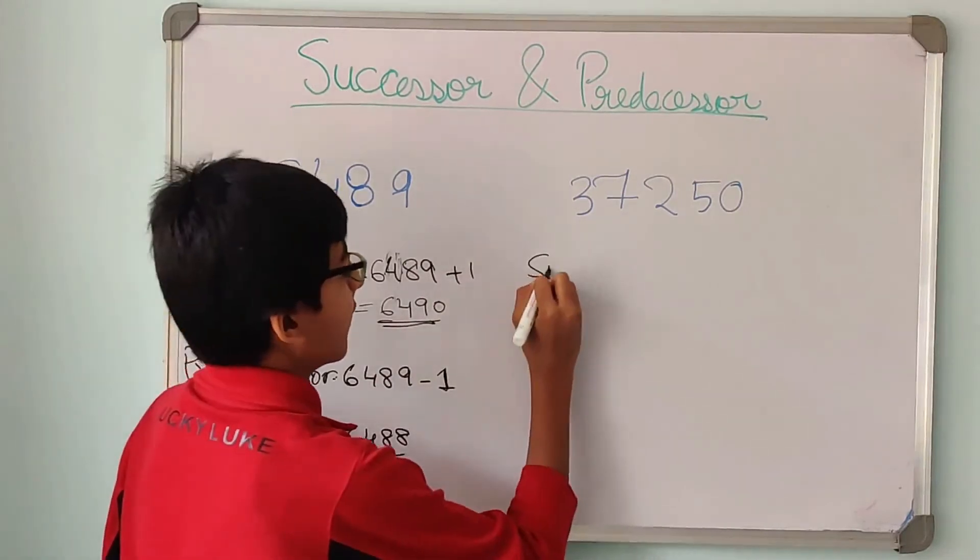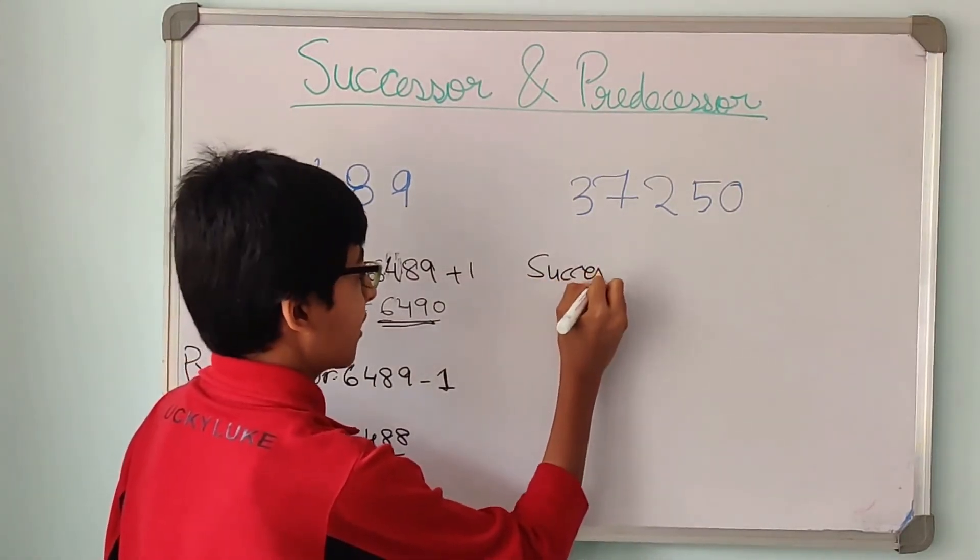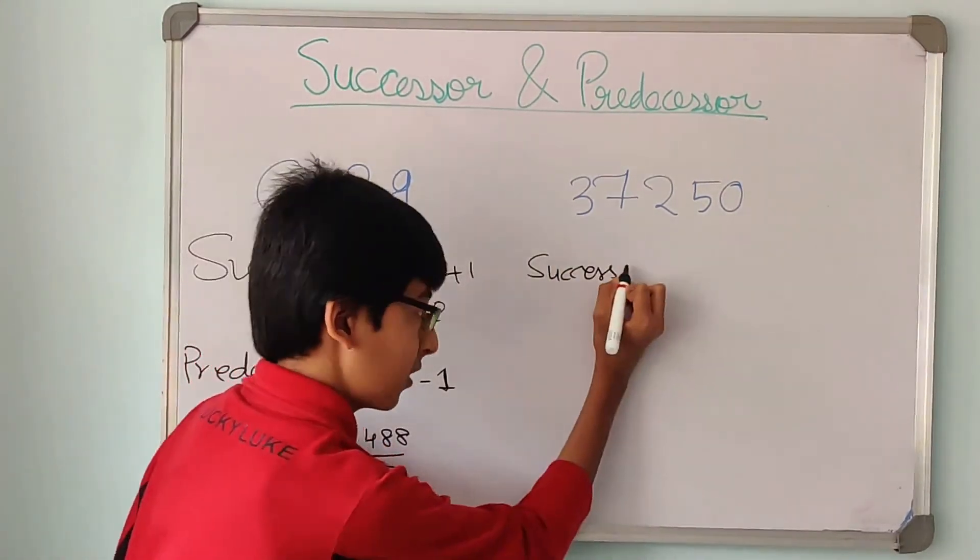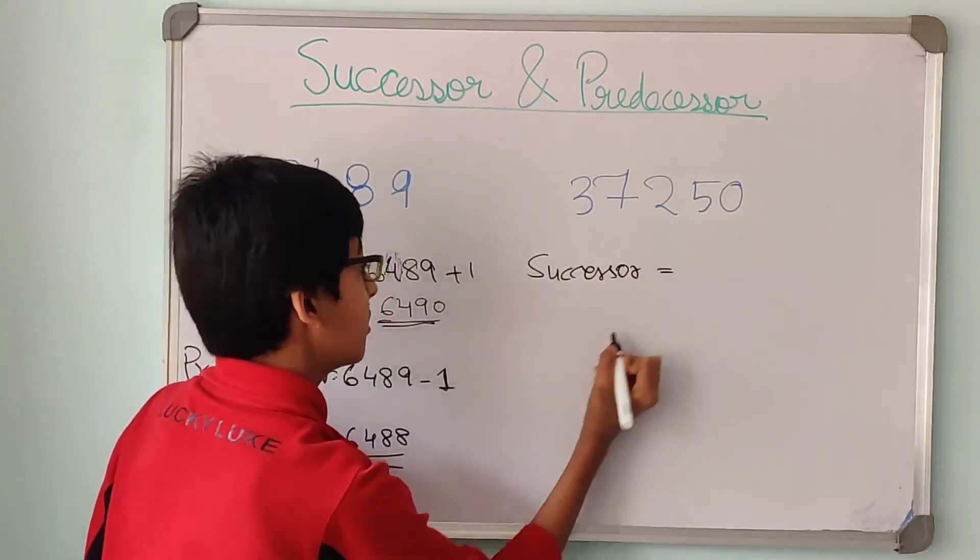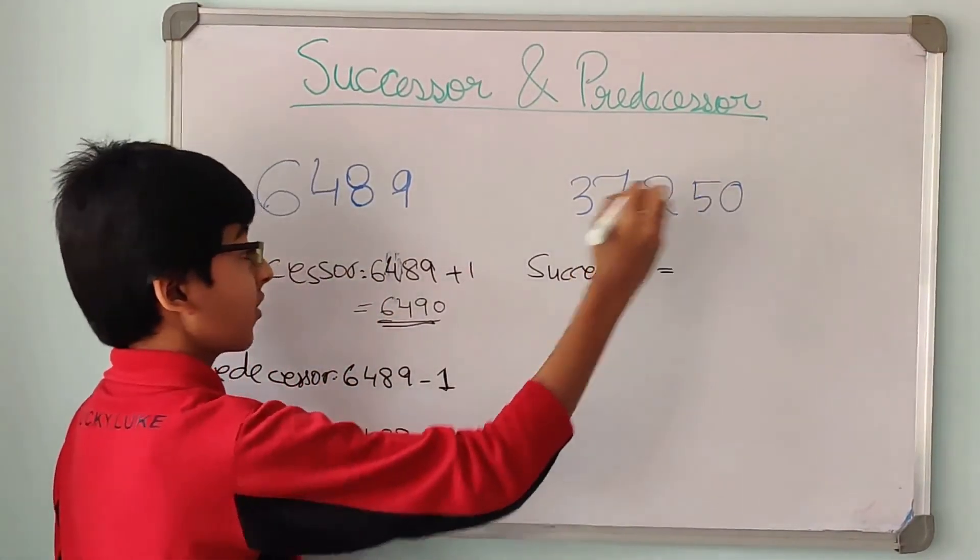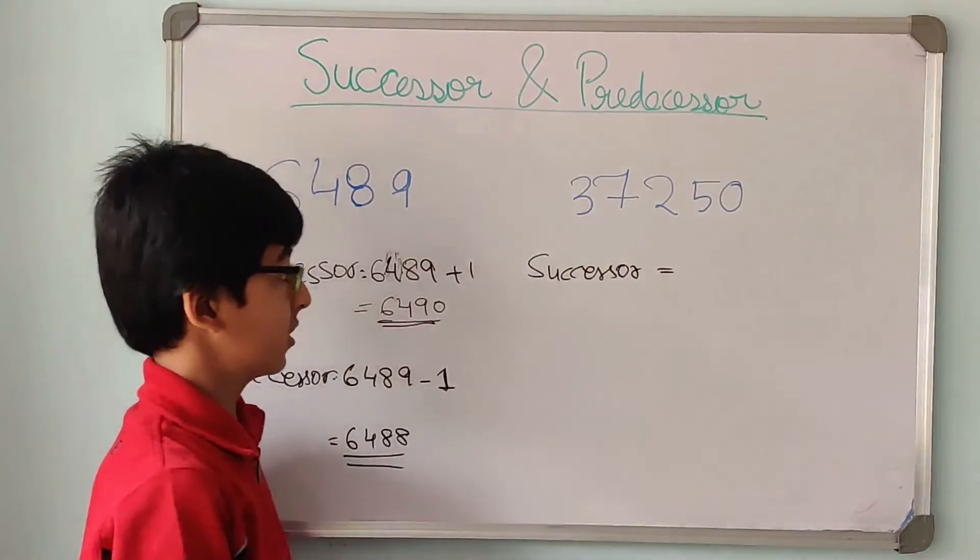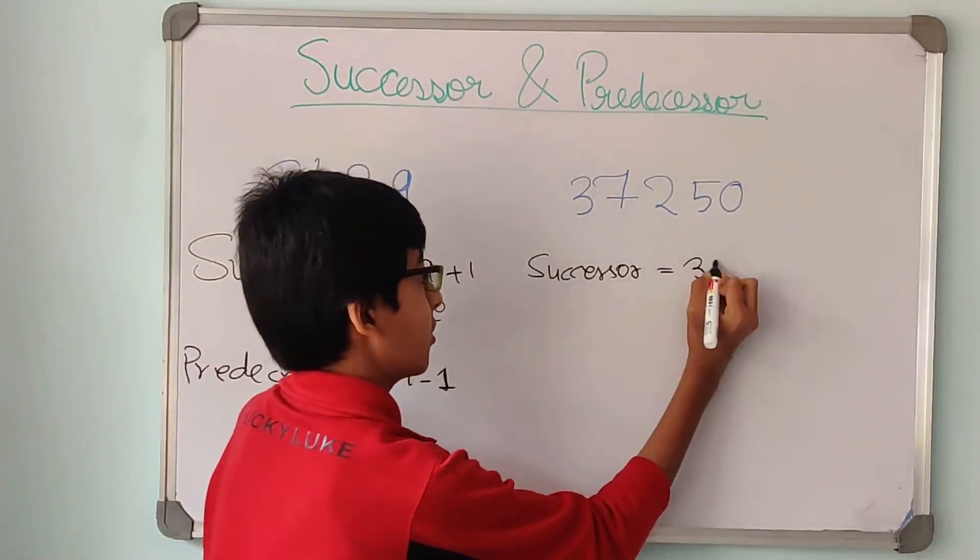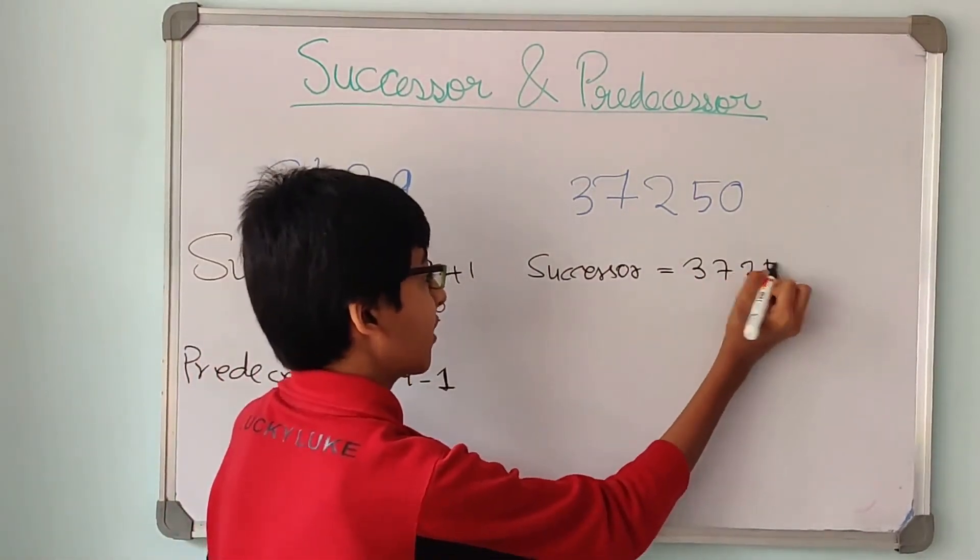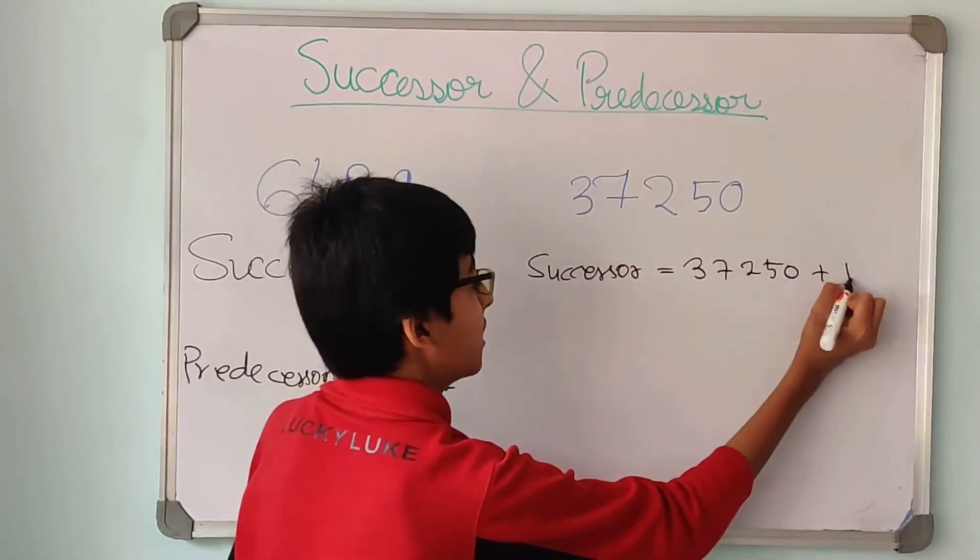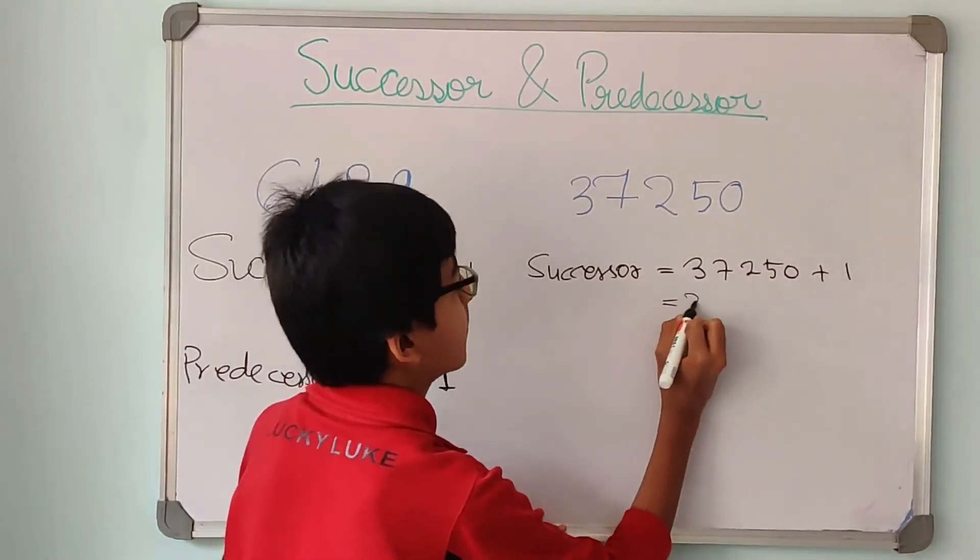Now let us find the successor and predecessor of 37250. The successor of 37250 would be 37250 plus 1. That gives 37251.